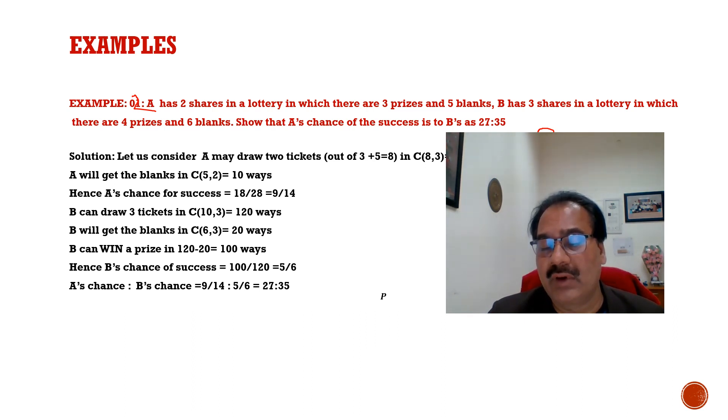NCR, what is NCR? Factorial N divided by factorial R into factorial N minus R. With the definition of NCR, you will find by calculation 8C2 means 28 number of ways. A will get the blanks in 5C2 ways, means 10 ways. Hence A's chance for success is 18 by 28.